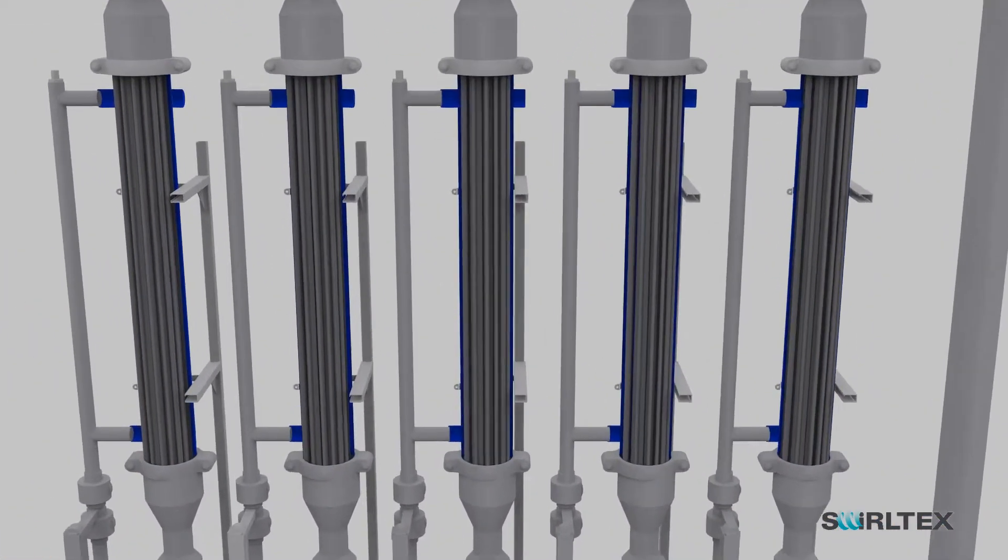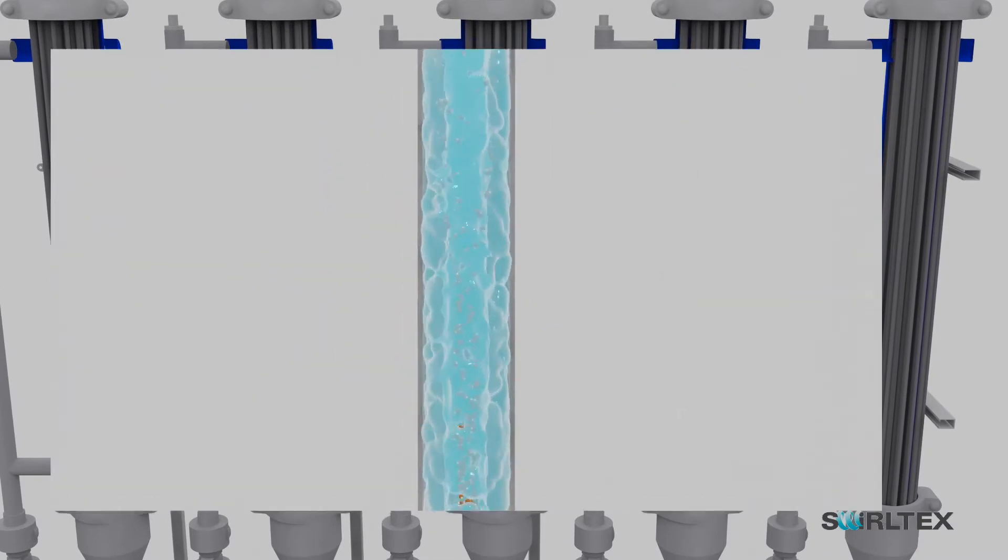The process stream and gas mixture enter the tubular membrane. Within each membrane tube, the stream is spun to create a vortex.